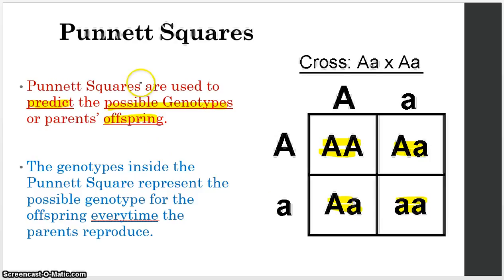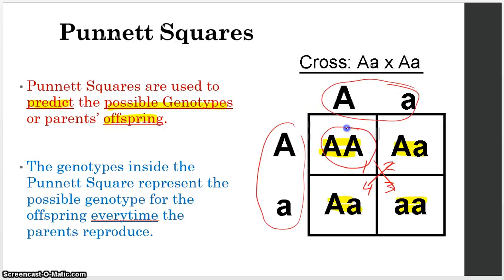Now, that does not mean that this is going to be the first kid, this is the second, then this is the third, and then this is the fourth. That is wrong. That's not how we do this. That means that every single time that these parents reproduce, their kids could possibly get this genotype, or they could possibly get this one, or possibly get this genotype.